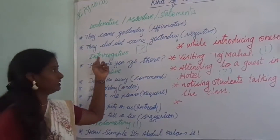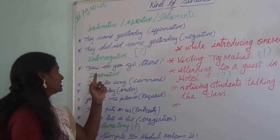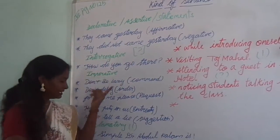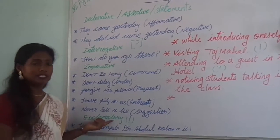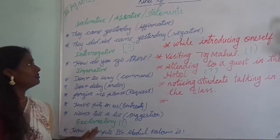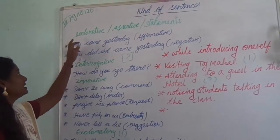And then interrogative. Interrogative is question. Then imperative. Then the last one is exclamation. So we have four kinds of sentences.